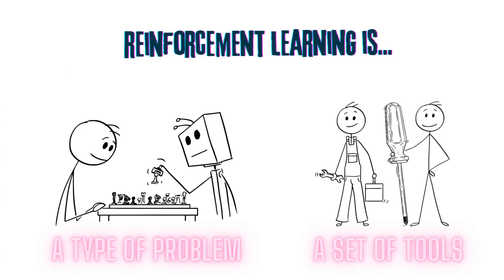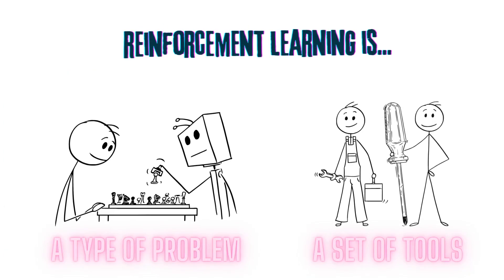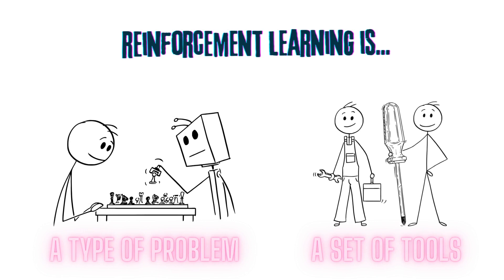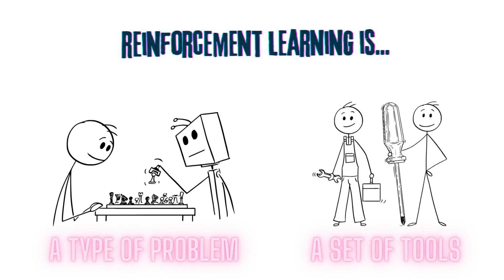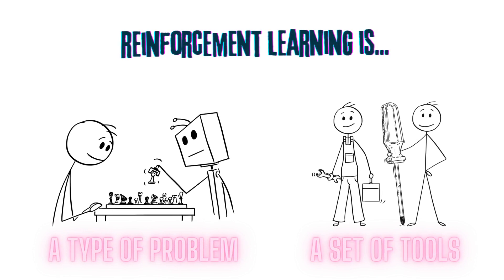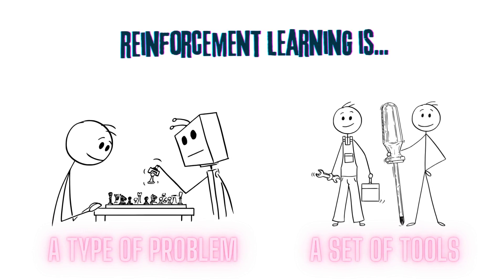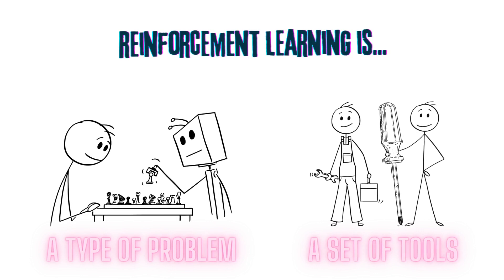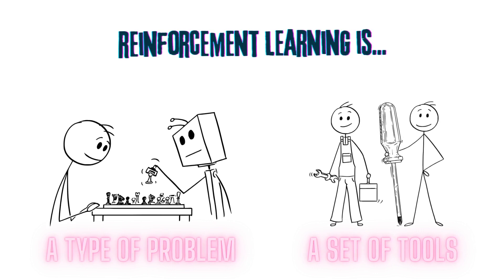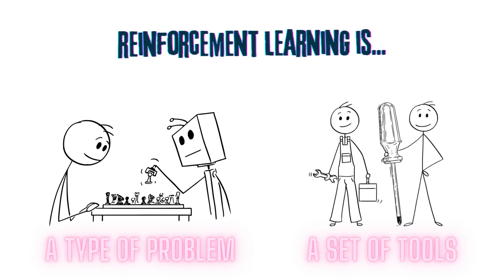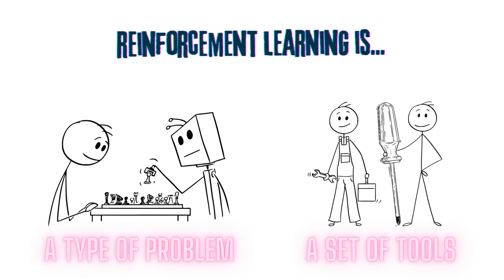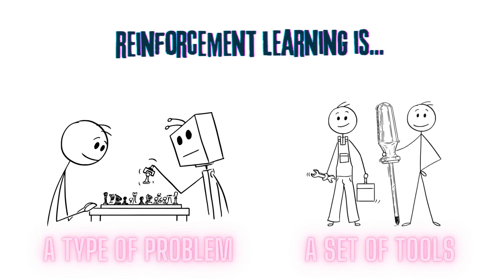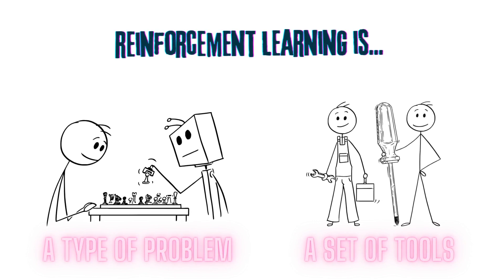When people say reinforcement learning, they can be referring to different things, and this can be a source of confusion. Firstly, RL can refer to the set of problems that the field of RL research aims to solve. Secondly, RL can refer to the set of tools that researchers have developed to solve this special type of problem.